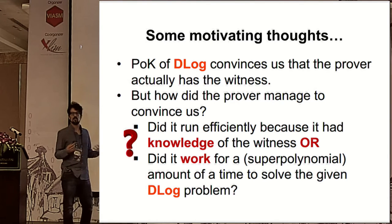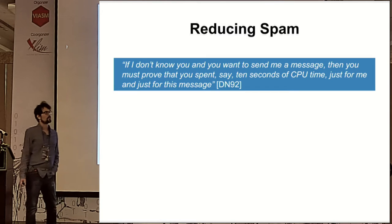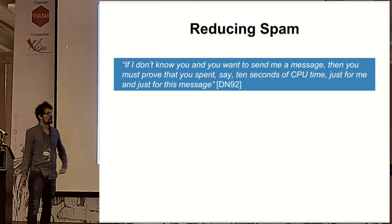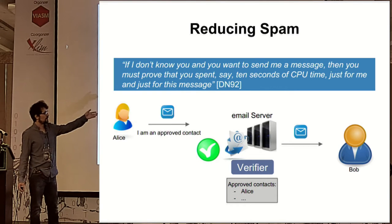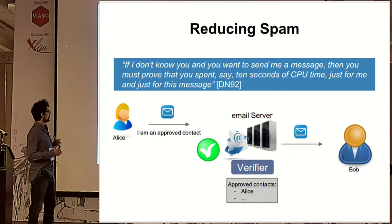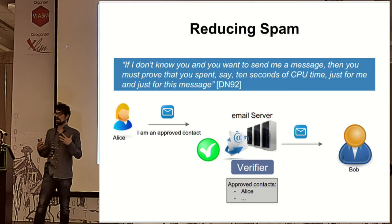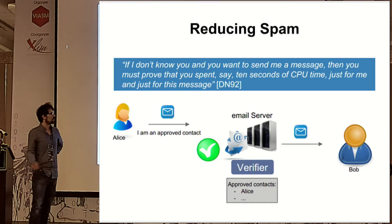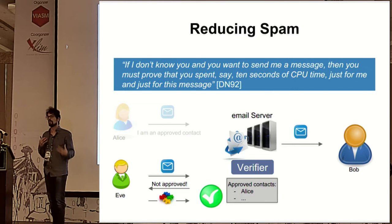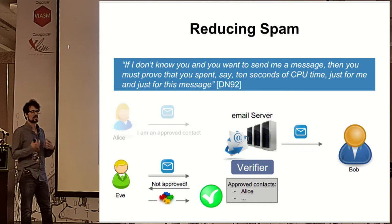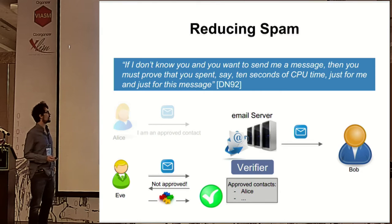We ran into the seminal paper on proof of work — called 'pricing functions' at the time — which proposed a spam-reducing mechanism. We have a mail receiver Bob, a mail sender Alice, and a mail server. If Alice is an actual valid contact, she proves some knowledge via a proof of knowledge. If someone is not a contact, the system forces them to spend some computational resources. Someone who is a spammer and not a contact will be discouraged from such an attempt.